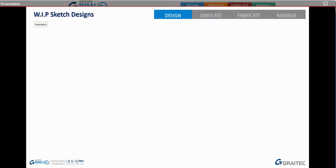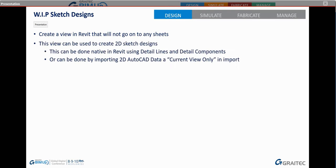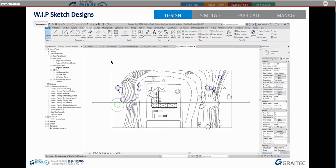We've got our tree data in there. Here's a tip I give everybody: create a view in Revit that will not go on any sheets. I always do this for architectural, structural, MEP, and landscape architecture workflows. It's where we can do sketches, layouts, 2D geometry, and import 2D CAD data and tell it to be in this view only. When you bring an AutoCAD file in, you can link it with the 'current view only' option — it brings it in like a detail element, so it won't appear everywhere else.